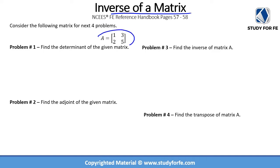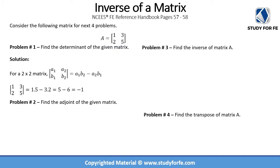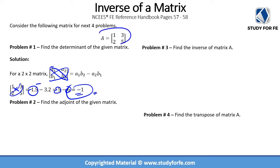Now let's go through practice problems on the topic of inverse of matrix. Problem number one asks us to determine the determinant of the given two by two matrix. For a two by two matrix, the determinant is a1 times b2 minus a2 times b1. In our case, one times five minus three times two gives us five minus six, which equals minus one. The determinant is a scalar — just one number, not a matrix.